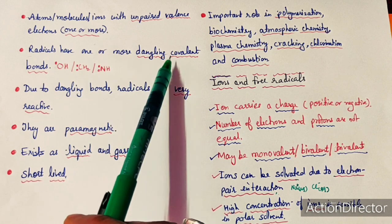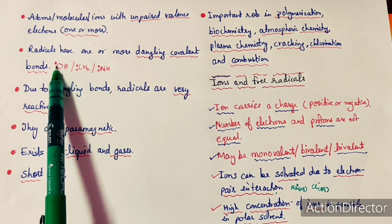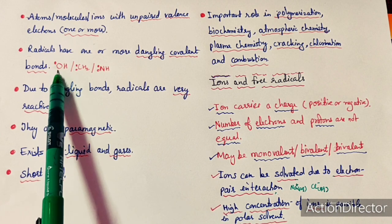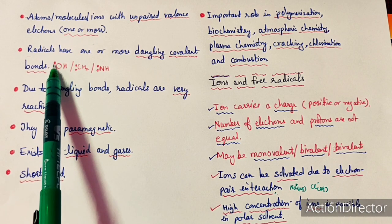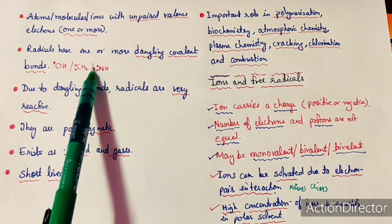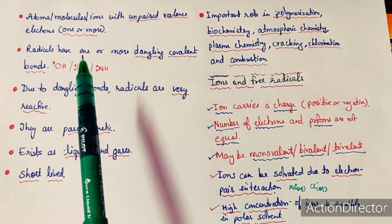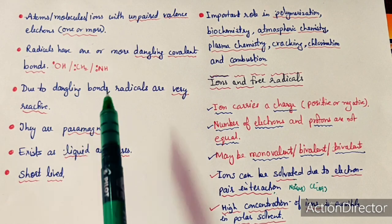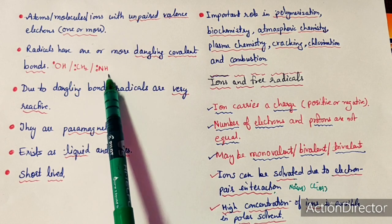Radicals have one or more dangling covalent bonds — for example OH, CH2, and NH. OH has one dangling covalent bond which can form a bond with a hydrogen radical to form H2O. CH2, which is carbene, has two unpaired electrons. If a free radical has two unpaired electrons, it is known as a diradical. Another example of a diradical is oxygen, which has two unpaired electrons in its valence shell.